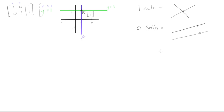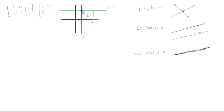For infinite solutions, we'd have one line, and then the second line would lie directly on top of it. At every point along that line, you can imagine the two lines are intersecting, giving infinitely many solutions.